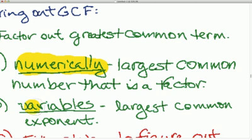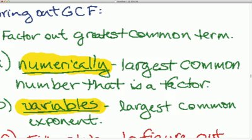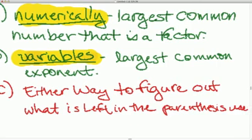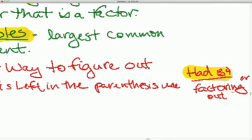And then variables, same concept. What is the largest power that shows up in each one of the added and subtracted expressions? Either way, to figure out what's left behind, you're going to always use what you had before over what you're factoring out, whether it's numerically or whether it is a variable.